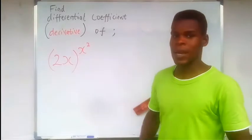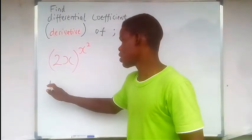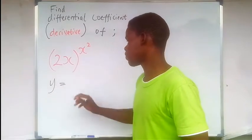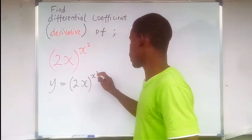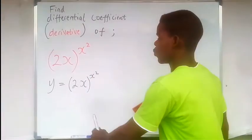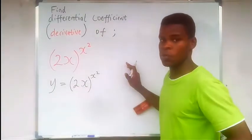Let's assign a variable to this function. Let's say y is equal to the function (2x), both of them raised to power of x squared. So we'll go ahead and find the derivative of y with respect to x.